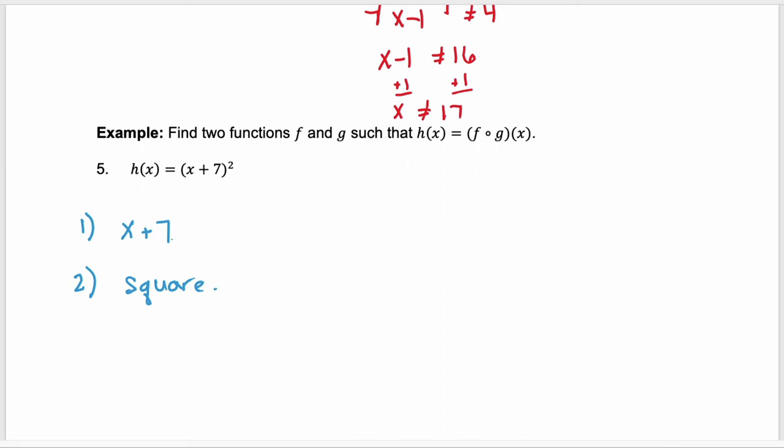So x plus 7 was my first step. So that is going to be my innermost function, g of x equals x plus 7. And then my f of x is going to be the thing squared. Because if I create the composition f of g of x, I would be taking this value for g of x and substituting it in for my x in the f function. So look at your order of operations, figure out how you would have to evaluate a certain value of x, and that'll give you some hints as to what your composition could be.